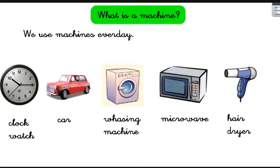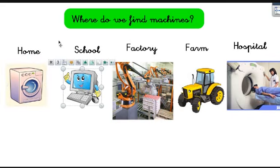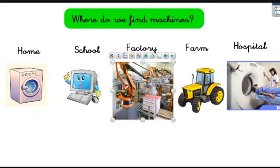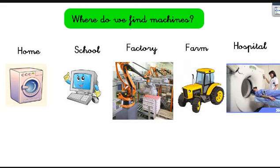Where do we find machines? We find machines everywhere. At home — yes, the washing machine. At school — a computer. In the factory, we find robots that make things. On the farm, we might find tractors or harvesters. And in hospitals too — look at this huge round thing: it's a scanner, and it's in the hospital.